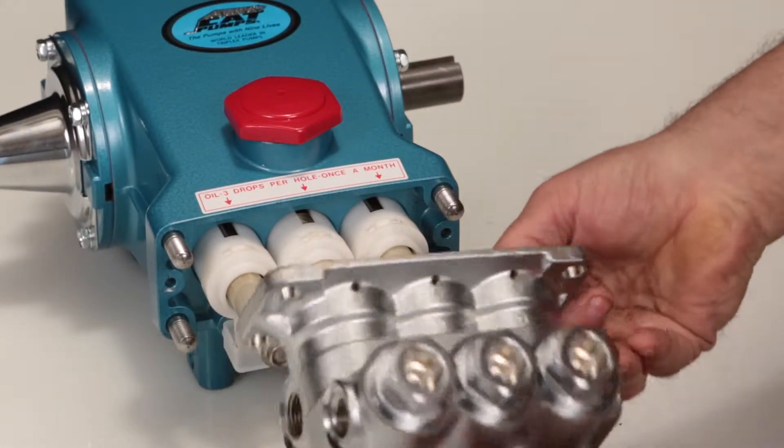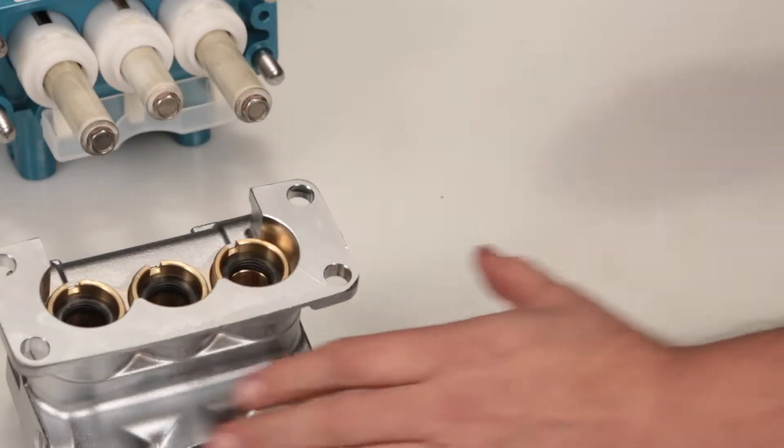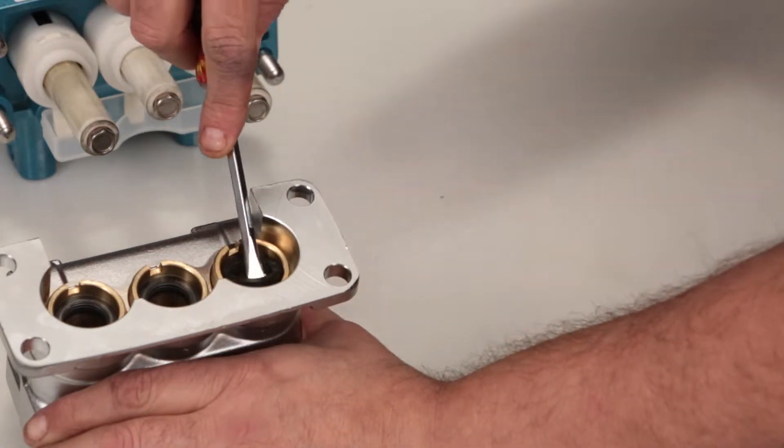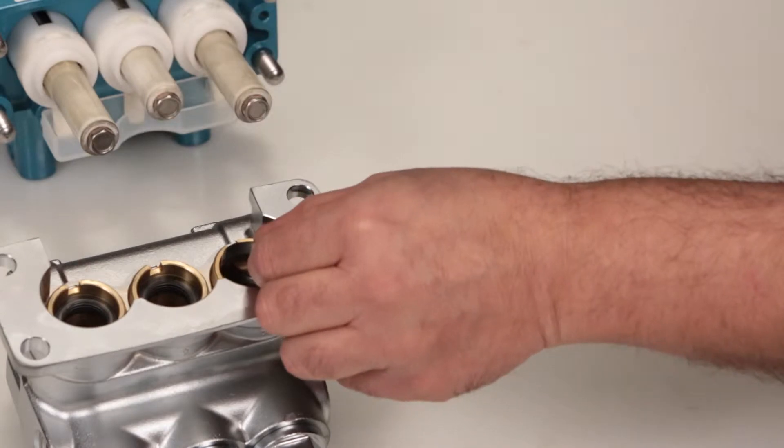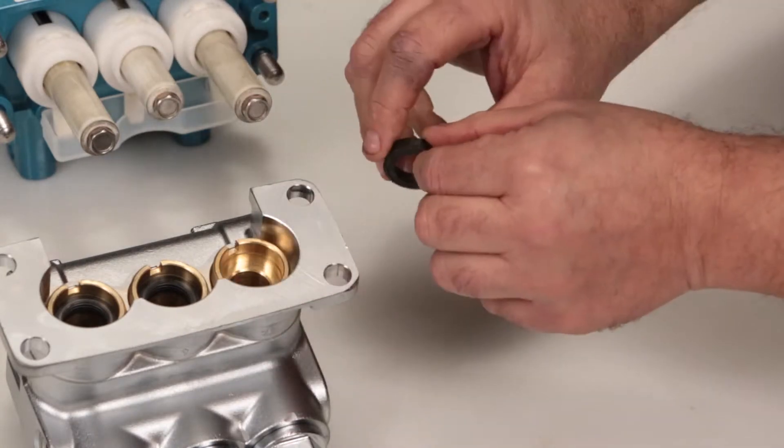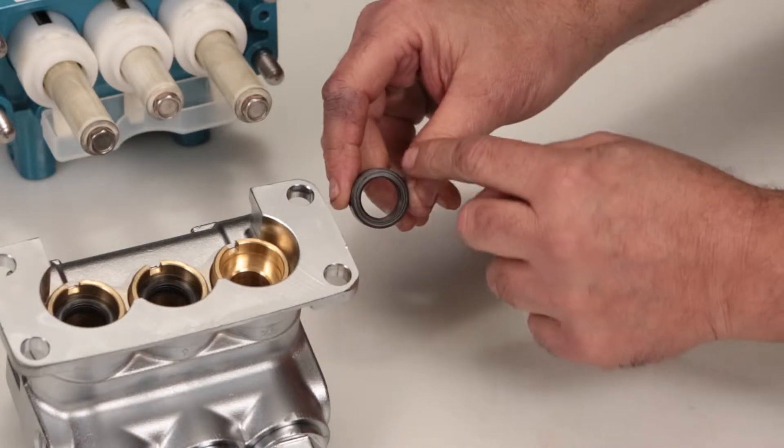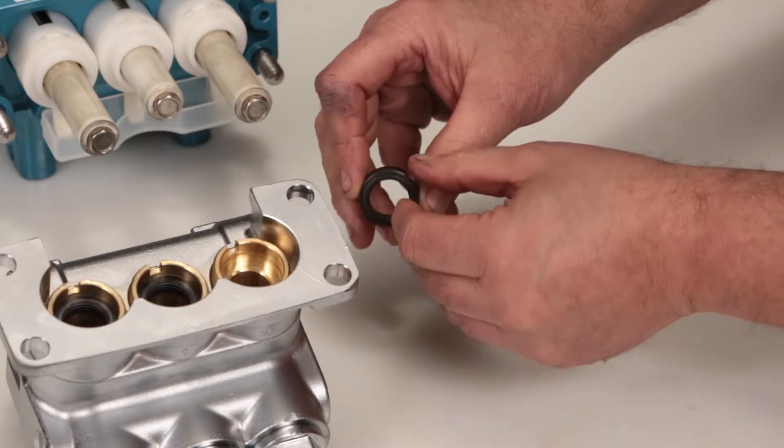Place the manifold on a flat surface with low pressure seals facing up. Place a flat tipped screwdriver under the low pressure seal and pry upward to remove. Be careful not to scratch the inner diameter surface of the seal case where the low pressure seals are located. Inspect the inside of the low pressure seal for wear or damage.